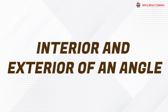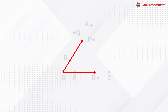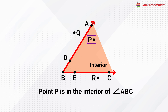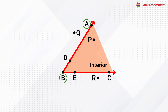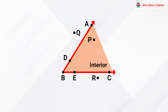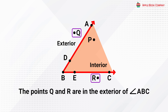Interior and exterior of an angle: the inside of an angle, that is the region between the rays, is called the interior of the angle. Point P is in the interior of angle ABC. Points A, B, C, D, and E are on the arms, also called sides of the angle. The points of the plane that do not lie on the arms or in the interior of the angle are in the exterior of the angle. The points Q and R are in the exterior of angle ABC.